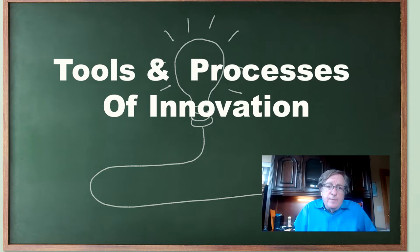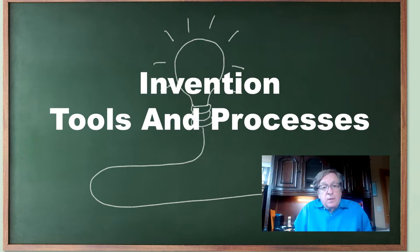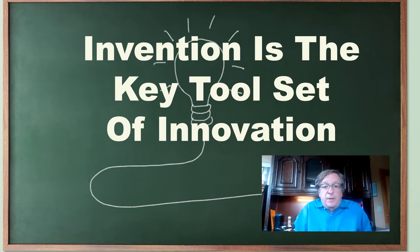In topic six, just like in a previous topic, we'll talk about why companies struggle with invention. In topic seven, we'll talk about the tools and the processes of invention. And then we'll stitch it all together in topic eight, where we'll demonstrate that invention is the key tool set inside of innovation.